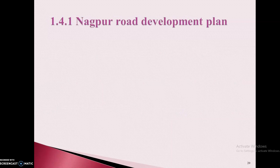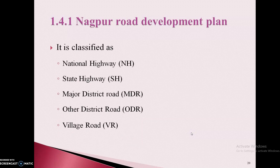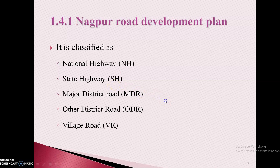We will see a detailed classification in the Nagpur Road Development Plan. It is classified as National Highway, State Highway, Major District Road, Other District Road, and Village Road. In brackets, you can see the short forms mentioned for these highways. The short form can also be seen on the nameplate or on a stone provided along the length of the highway, which indicates the type of highway.